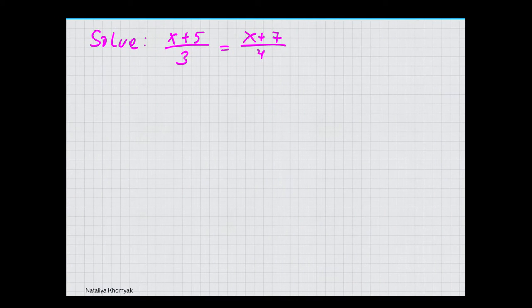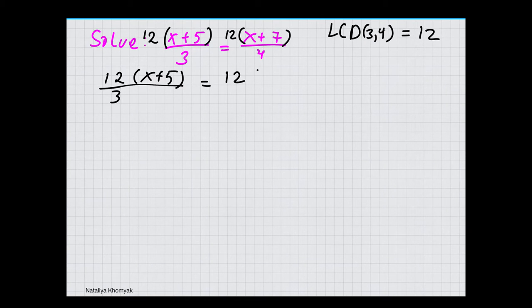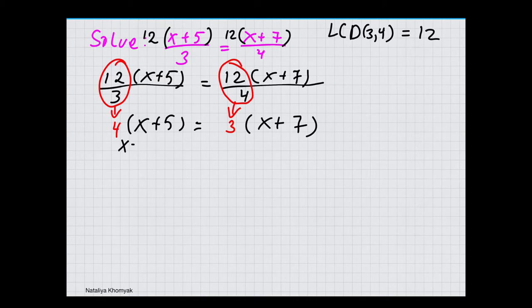Here we have (x+5)/3 equals (x+7)/4. I'm going to multiply each term by the least common denominator of 3 and 4, which is 12. Since there is addition in the numerators, I'm going to put parentheses around them. So times 12 on each term. 12 divided by 3 is 4 times (x+5) equals 12 divided by 4 is 3 times (x+7). Now we distribute.